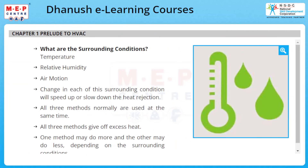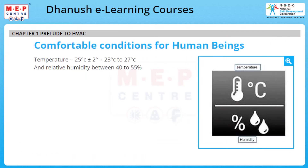The surrounding conditions to be considered in heat transfer are temperature, relative humidity, and air motion. A change in each of these conditions will speed up or slow down heat rejection. All three methods of heat transfer are normally used at the same time. The comfortable conditions for human beings are a temperature of 25 degrees centigrade plus or minus 2 degrees centigrade, and a relative humidity between 40 to 55 percent.